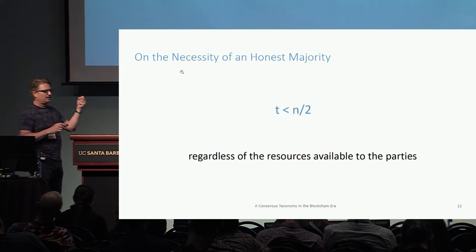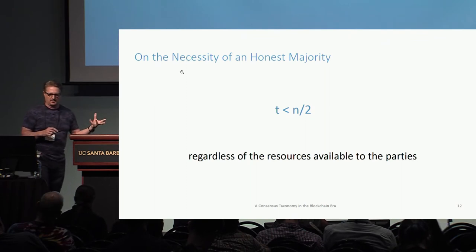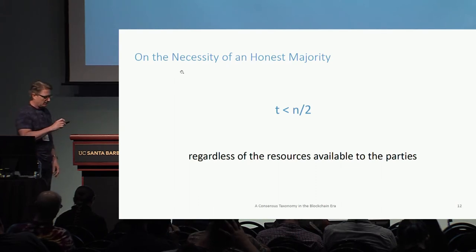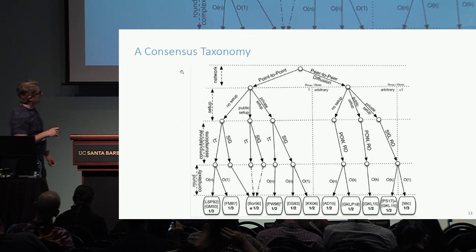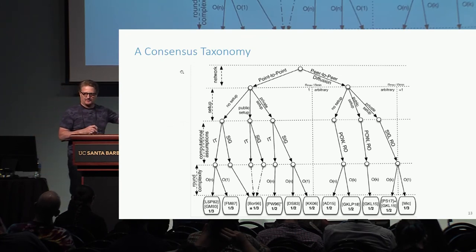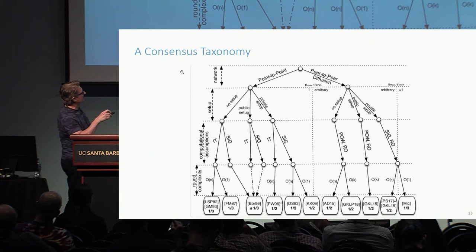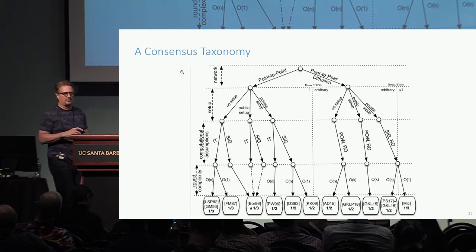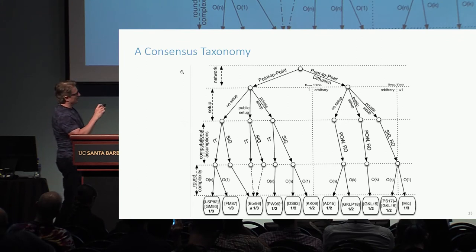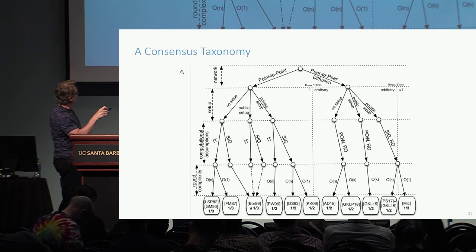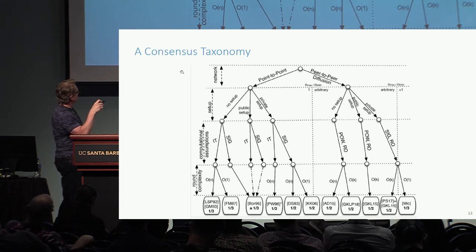One key observation: in the cryptographic computational setting, you need an honest majority to solve the consensus problem, regardless of what resources you use. We get a picture where on the left we have the classical world and on the right the new proof-of-work blockchain world. The layers are: network layer with point-to-point or peer-to-peer communication, what kind of setup the protocol uses, computational versus information-theoretic assumptions, signatures, and round complexity.